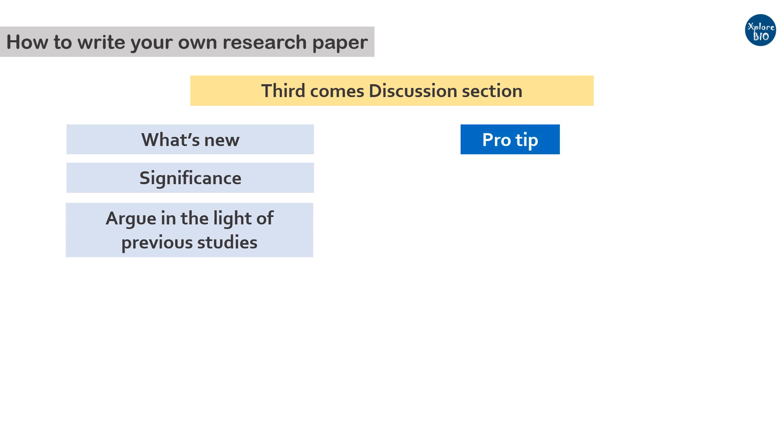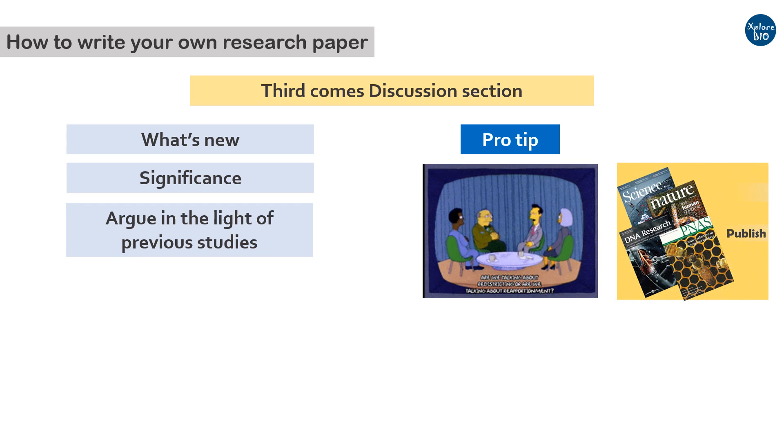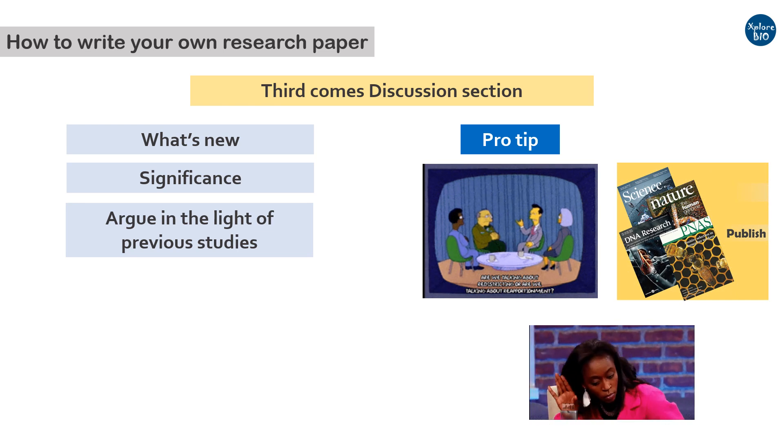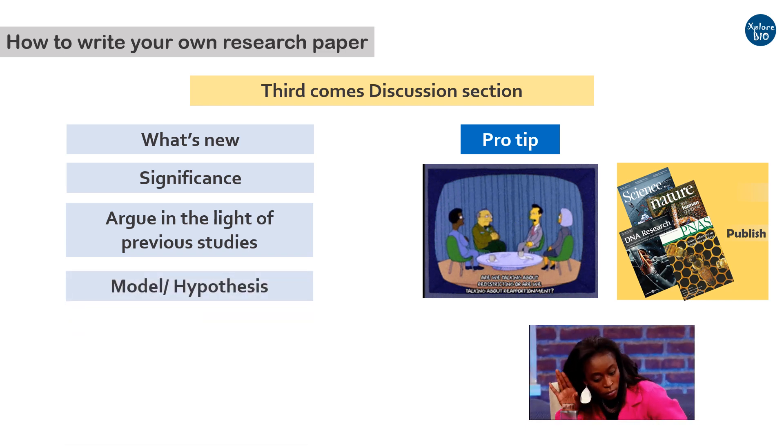So, here is a pro tip for you. Always discuss your results with your colleagues and supervisor. You can also give a lab presentation for this. This is important because you may not see the limitations with your experiments and data, but others can easily point it out. They may also suggest some improvements or point out an interesting inference out of your results that can add more strength to your paper to be published in a good journal. So, listen to them carefully. You can also include a model or a hypothesis based on the results if promising.